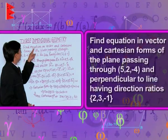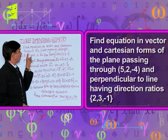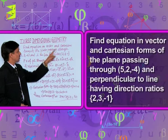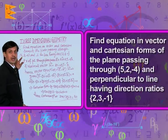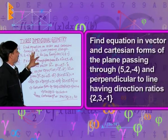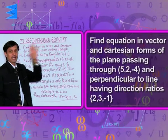The example is: find the equation in vector and Cartesian form of the plane passing through the point with coordinates (5, 2, -4) and perpendicular to the line having direction ratios 2, 3, -1.